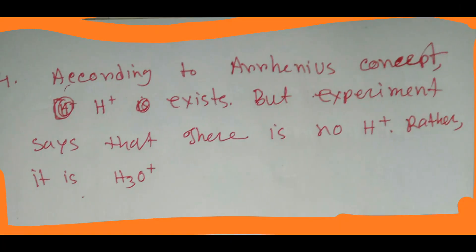Number four limitation is that according to Arrhenius concept, hydrogen ion H+ exists, but experiment says that there is no hydrogen ion, rather it is hydronium H3O+. So actually we get hydronium ion, there is no existence of hydrogen ion.